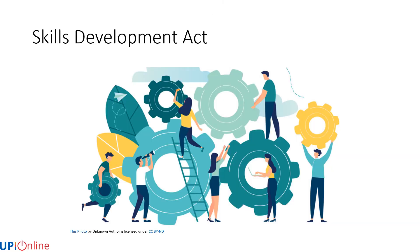The Skills Development Act comprises 8 chapters and was amended in 2014. The Act is essential and provides a watchdog context, ensuring that government and employers subsidise learnership programs and that there are continuous skills programs. The Department of Labor also takes accountability for the Skills Development Training Planning Unit and the financing and management of the National Fund for Skills.